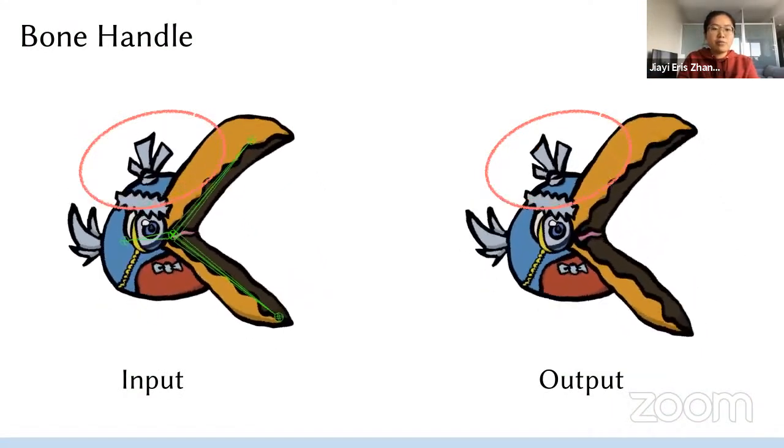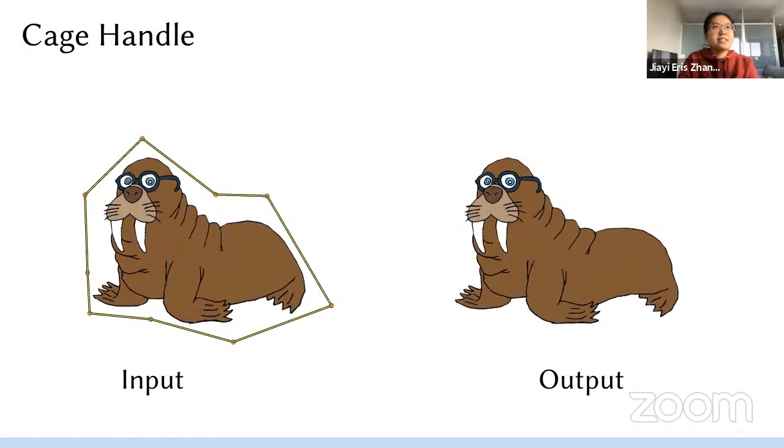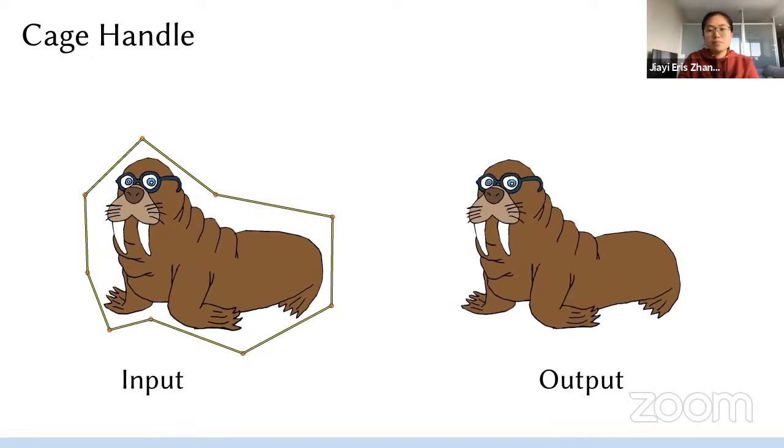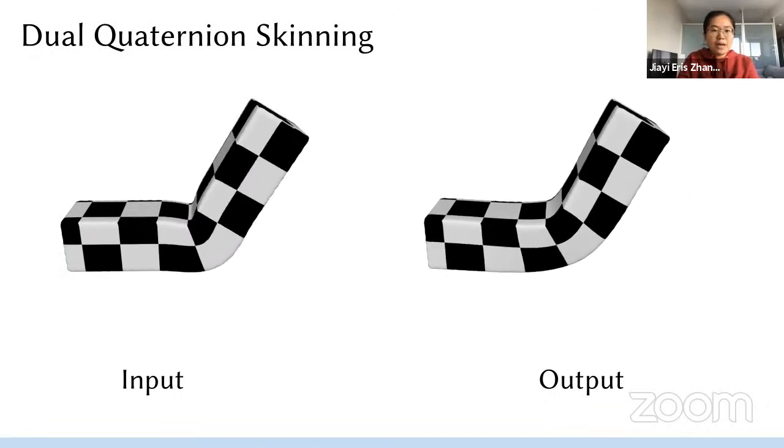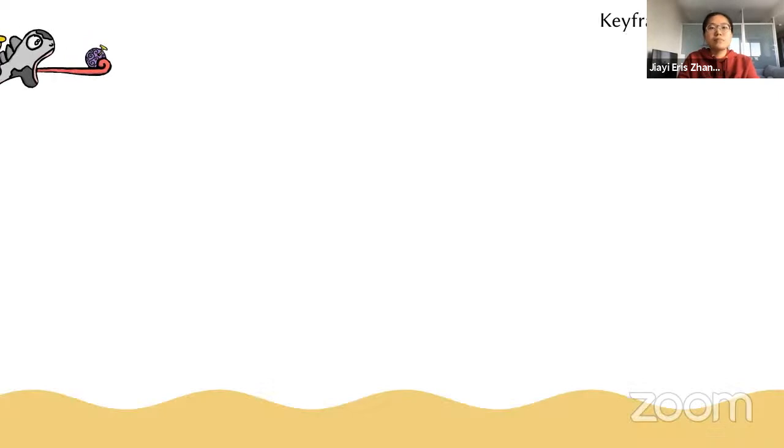To demonstrate how effectively this simple additional constraint can work, we tested on a variety of different examples. First of all, we showed that our method can work for any rig type. This is a 2D Angry Bird model rigged with three bone handles. And you could see how its feather becomes jiggly. And same for this cage handle example, the Voros model is rigged with harmonic coordinates.